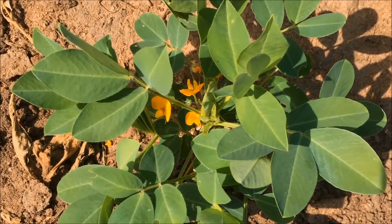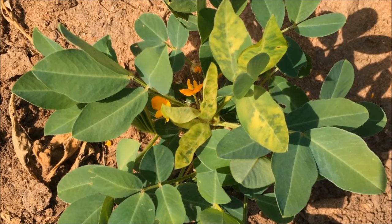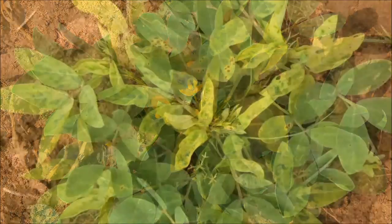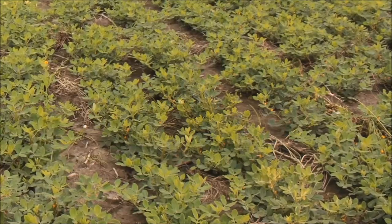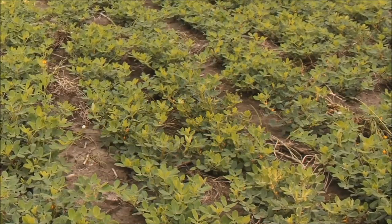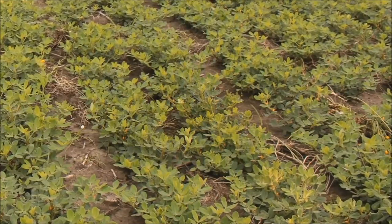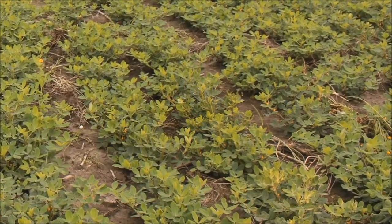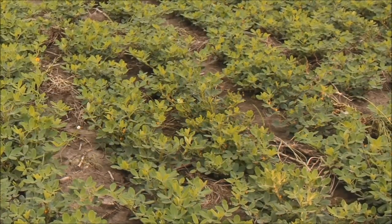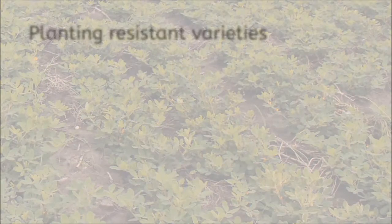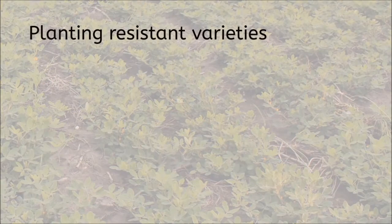The healthy plant then becomes infected with virus and develops the typical disease symptoms. There are several measures you can take to control rosette disease. To start with, you can try to prevent the disease from occurring by planting resistant varieties.